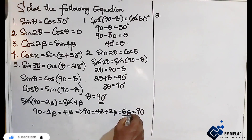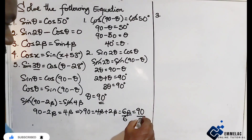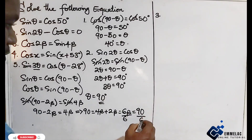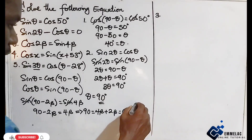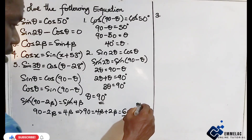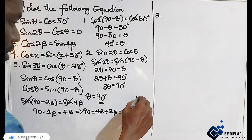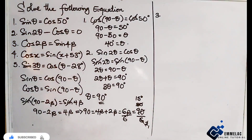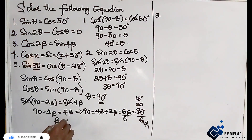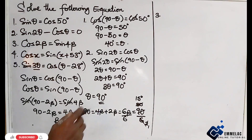Dividing both sides by 6, we get beta equals 15 degrees.